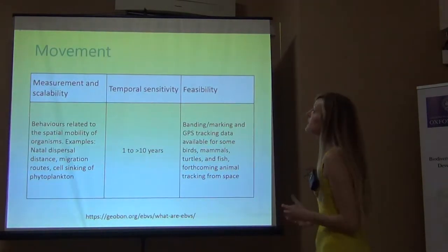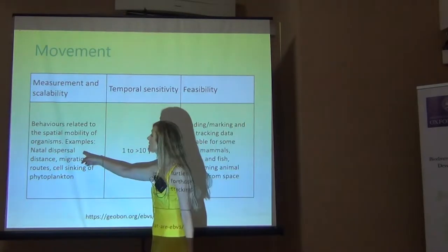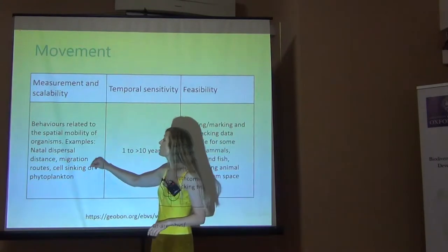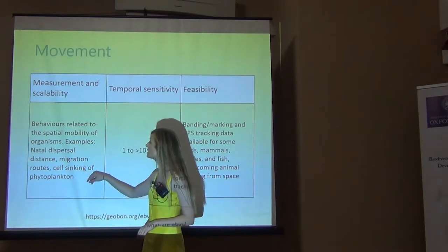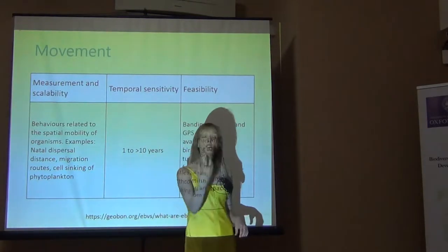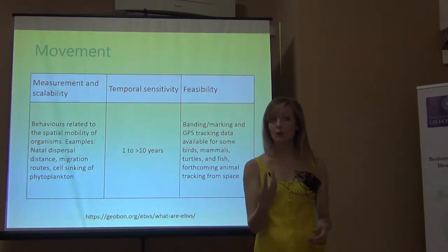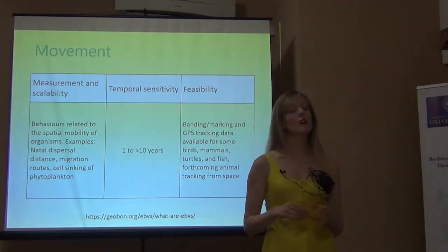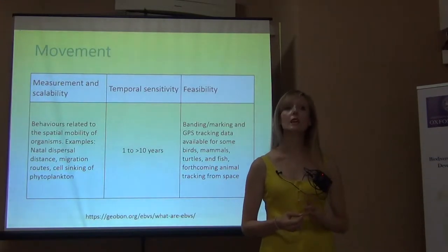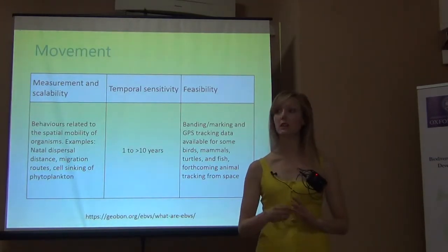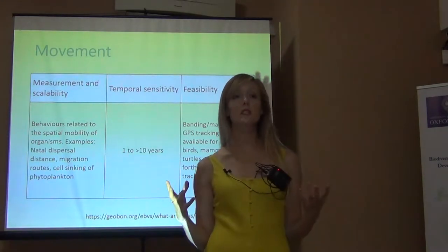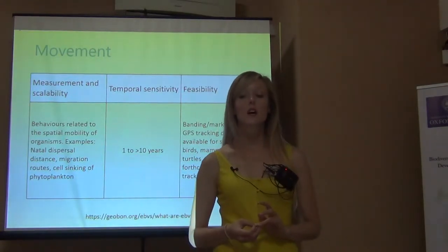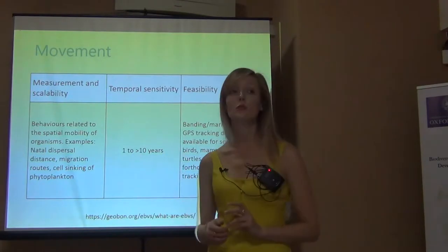And then movement — things like natal dispersal distance, so how far does an organism disperse after it's born, and migration routes. Something you might not think about is cell sinking of phytoplankton: what's the rate at which cells sink and how far do they sink? The data for this are not so great but getting better. We're doing a lot of tracking of movement of organisms, mostly large-scale global migratory patterns, and that data is available.